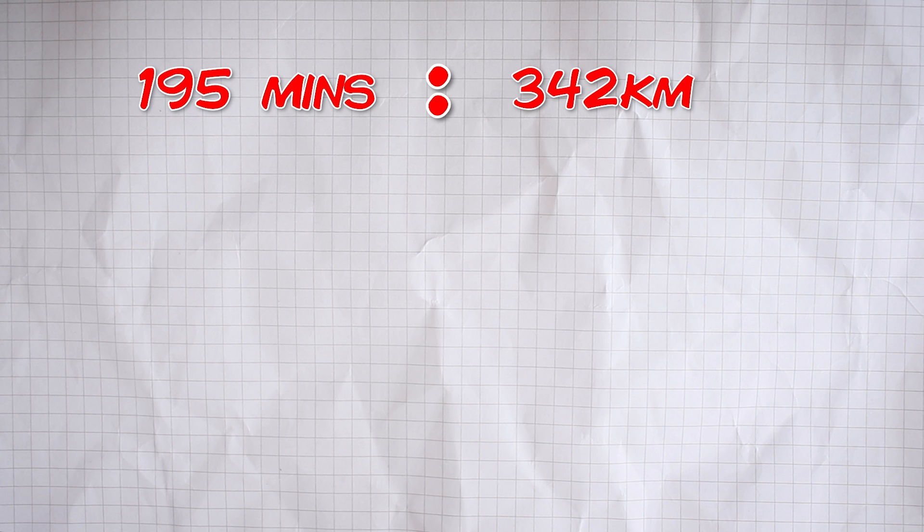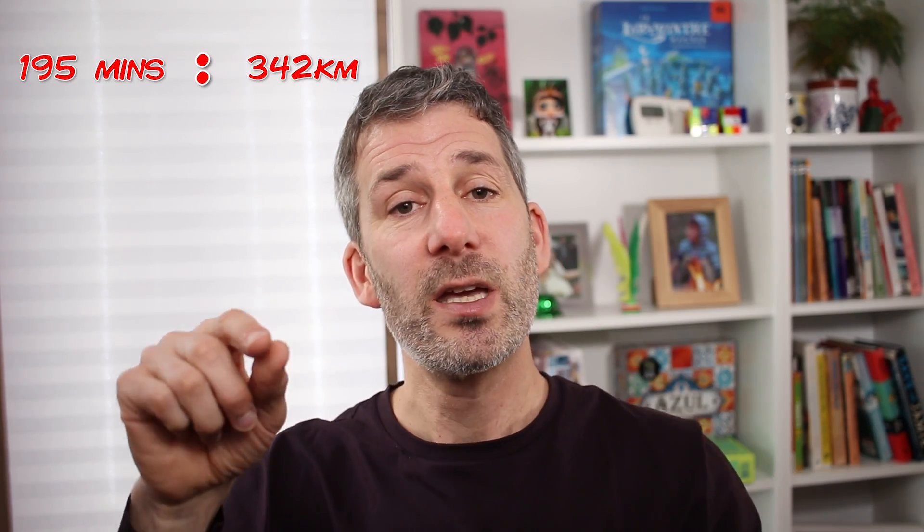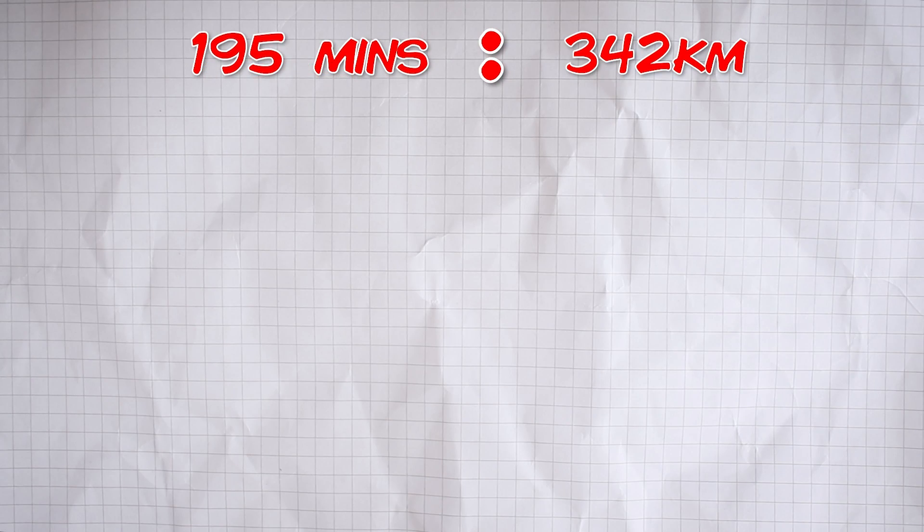Now, we have the ratio 195 to 342. You'll notice that the distance is just under two times as big as the time and it's worth noting that because when we get our answer at the end it should still be in the same proportion. In other words, the number of kilometres should still be just under twice as many as the number of minutes. We want to know how long it will take to travel 114 kilometres and it's not easy to see how we do that in one step. So, we'll do just as we did last time and we'll divide down to one kilometre and then we'll multiply back up to 114.